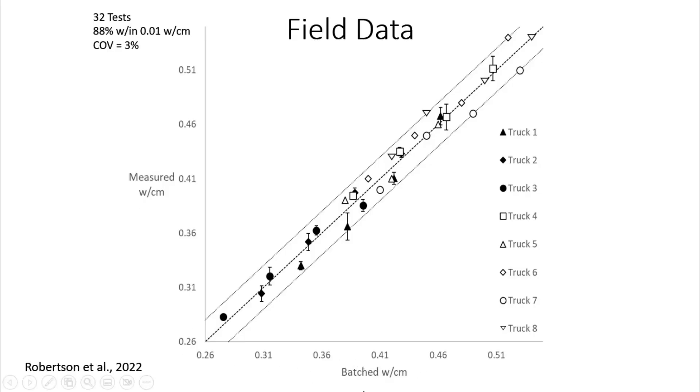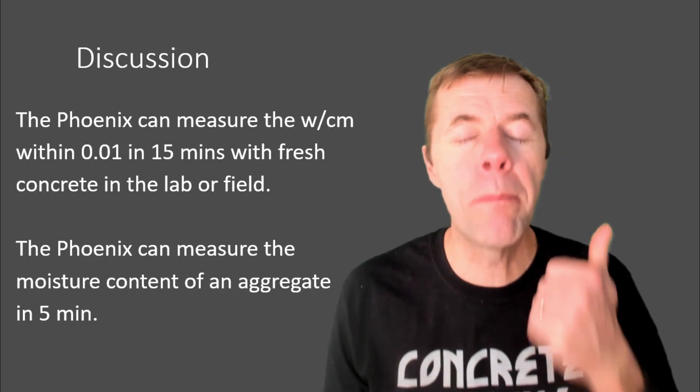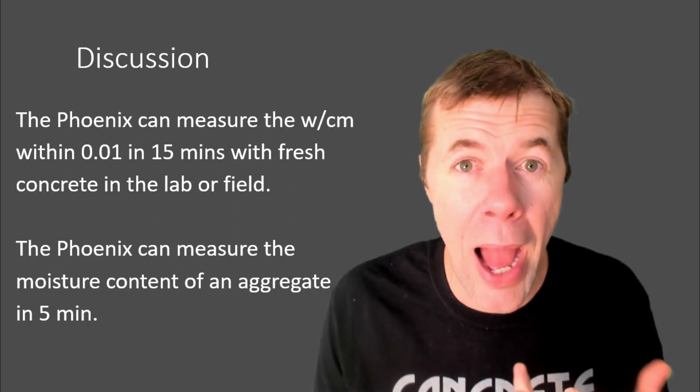Here we go on the x-axis. This is what the batch ticket thought the water-to-cement ratio was. Here is the measured water-to-cement ratio. This would be perfect agreement with the dash line. And, again, this is plus or minus 0.02. And what we did is we took a concrete truck with a known concrete mixture, measured it with the Phoenix, added exactly 0.04 water-to-cement ratio to it. We weighed out the water, dumped it in, mixed it up, got another sample, measured it again, measured it again, measured it again. We took eight trucks, did each truck four times, turns it into 32 different tests. And look, 88% of the data was within 0.01 water-to-cement ratio. And 100% of the data was within 0.02. And look at this coefficient of variation again. 3%. Again, that's way more accurate than a concrete cylinder machine. So the Phoenix can measure the water-to-cement ratio within 0.01 in 15 minutes in fresh concrete in the lab or the field.